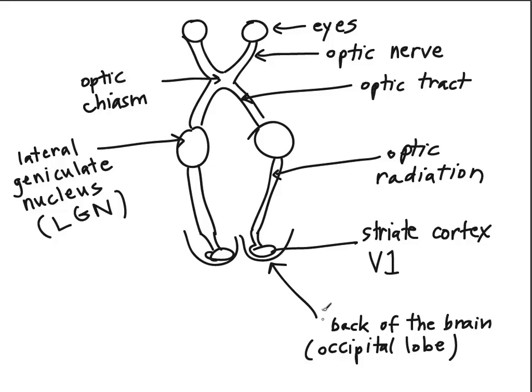And that's an overview of the pathway of visual information from the retina all the way back into the primary visual cortex.